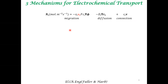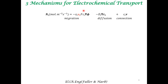There are three mechanisms for electrochemical transport. You are probably aware from your fluid mechanics class about convection — we're not going to be dealing with that in this set of lectures. In your mass transfer class, we must have looked at diffusion. So what is quintessential to electrochemical transport is this particular mechanism of migration.